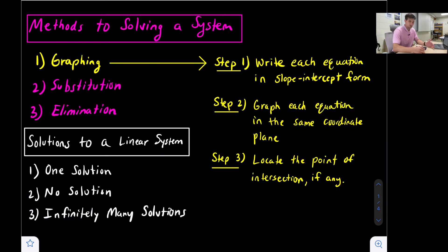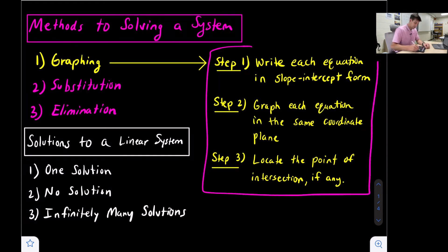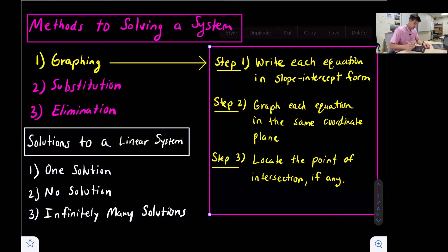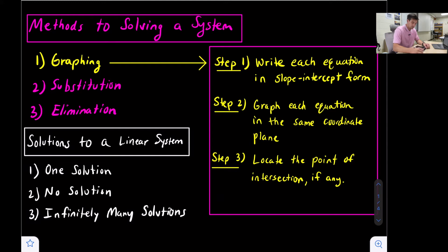We'll have separate videos on substitution and elimination. For graphing, it's kind of a three-step process. On the right side of our screen we see the three steps to follow when using graphing. Step one says we want to make sure each equation is in slope-intercept form. This might be a step we can skip if the two equations are already in slope-intercept form.